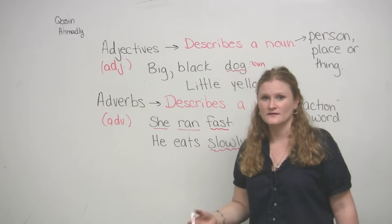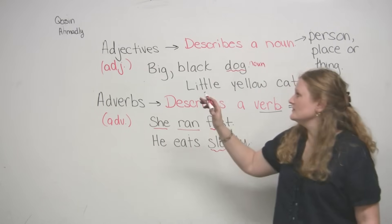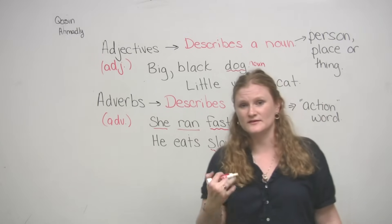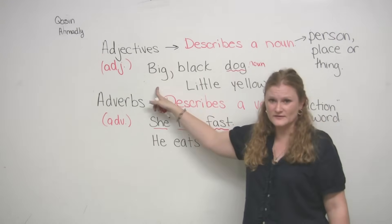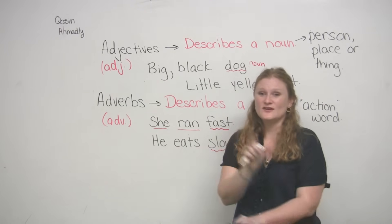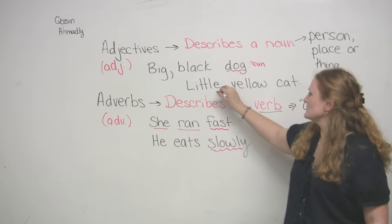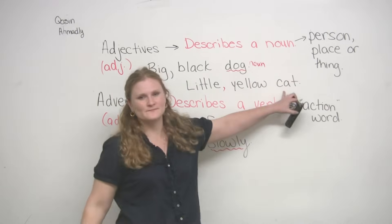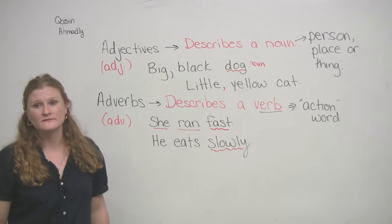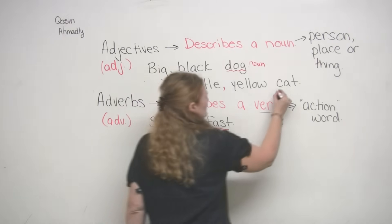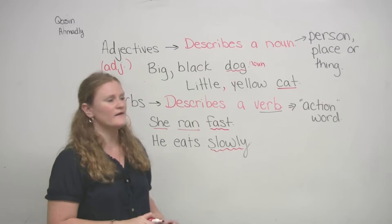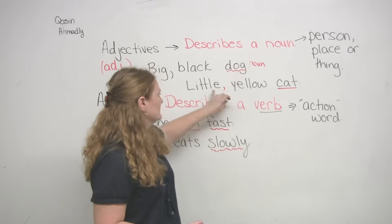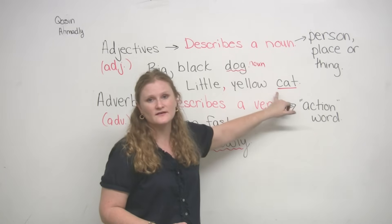The other thing to keep in mind in English is when you're describing something, we always go shape and then color. Most languages — Japanese, Korean, and Spanish — you would say 'black big dog.' But in English, just to make it more difficult, we say 'big black dog.' Similarly, we have 'a little yellow cat.' The noun is 'cat,' and in English we always go size, then color, then the actual noun.